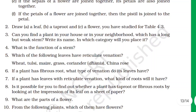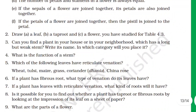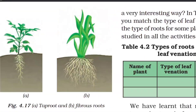Moving to the second part of this question: tap root. A tap root has a straight main root with a few branches. And then there is fibrous root. So this diagram shows tap root and fibrous root.